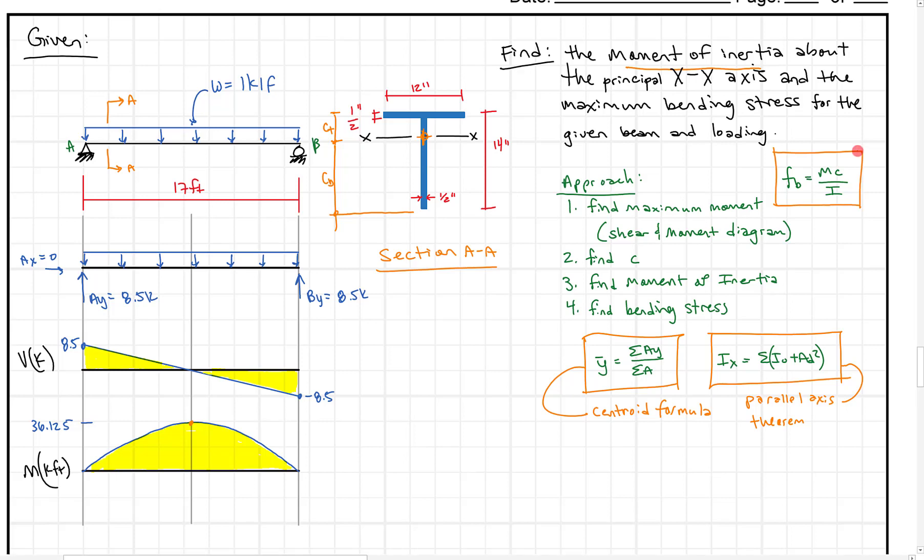Alright, so we're going to continue on in finding the moment of inertia and the maximum bending stress for this beam given the loading that we have here, one kip per foot. So in the first video, what we did is we identified an approach. We'd go and find the maximum moment, which we said was 36.125 kip feet.